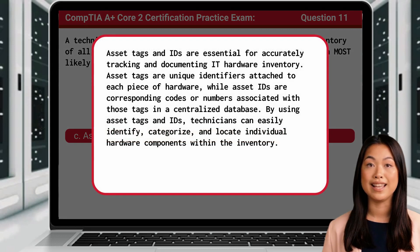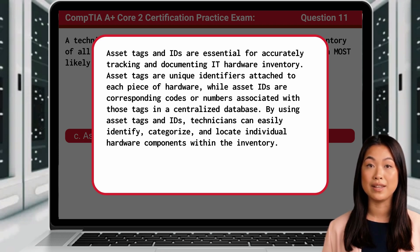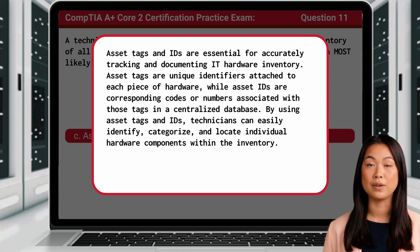Asset Tags and IDs are essential for accurately tracking and documenting IT hardware inventory. Asset Tags are unique identifiers attached to each piece of hardware, while Asset IDs are corresponding codes or numbers associated with those tags in a centralized database. By using Asset Tags and IDs, technicians can easily identify, categorize, and locate individual hardware components within the inventory.